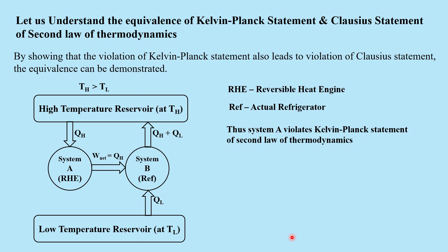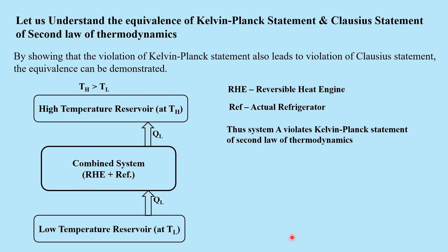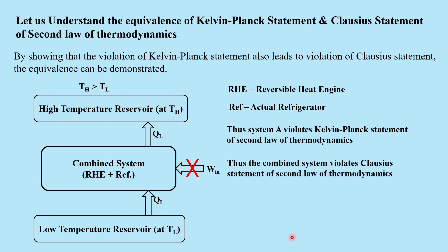Now, if we combine System A and System B, that is the reversible heat engine along with the actual refrigerator, this combined system is extracting heat QL from a low temperature reservoir and supplying the same amount to a high temperature reservoir without any external work being provided to it. Thus, the combined system violates the Clausius statement of the second law of thermodynamics. Hence, both statements are equivalent — violation of one statement leads to the violation of another. Hope you have enjoyed the video.